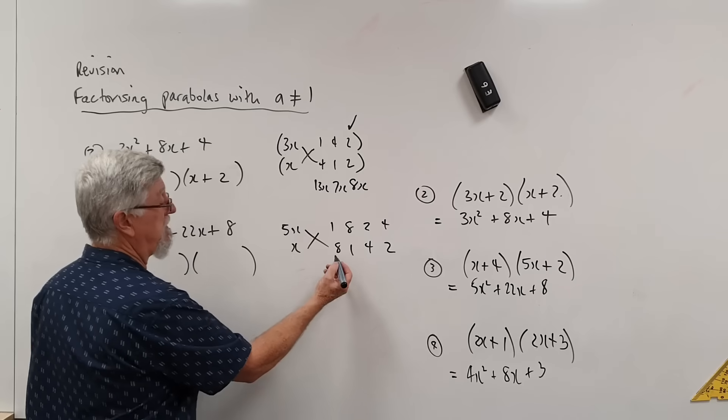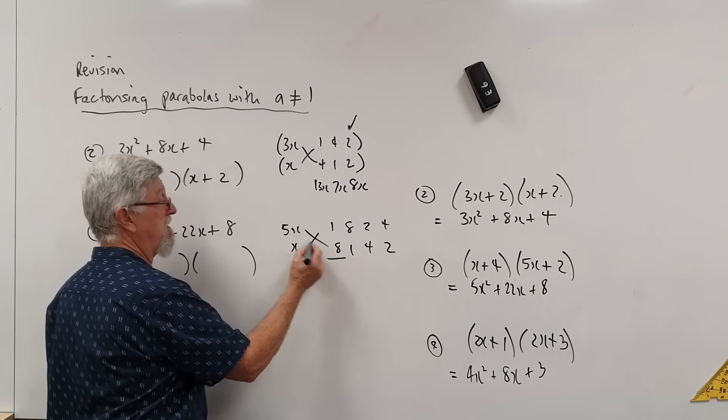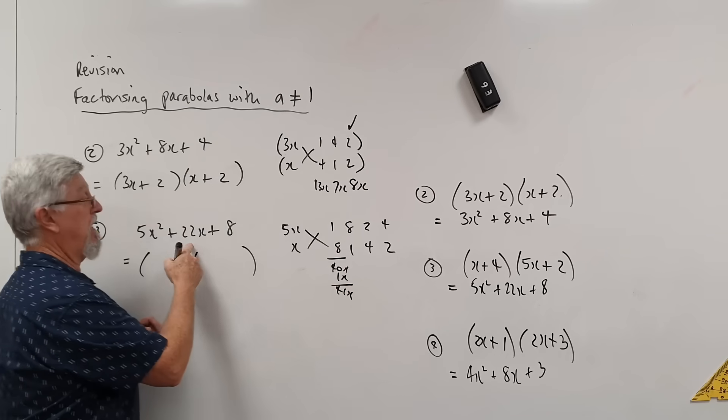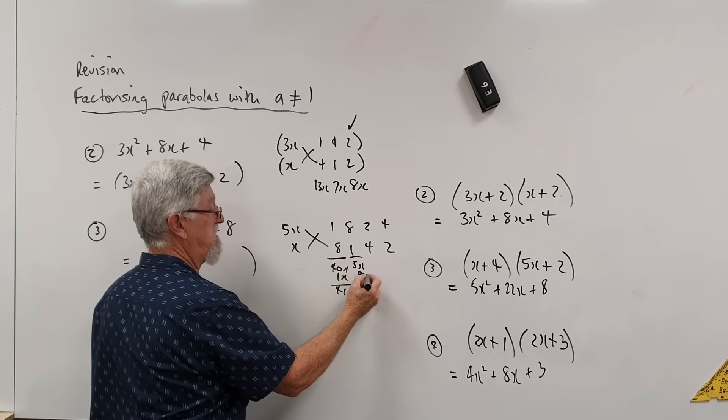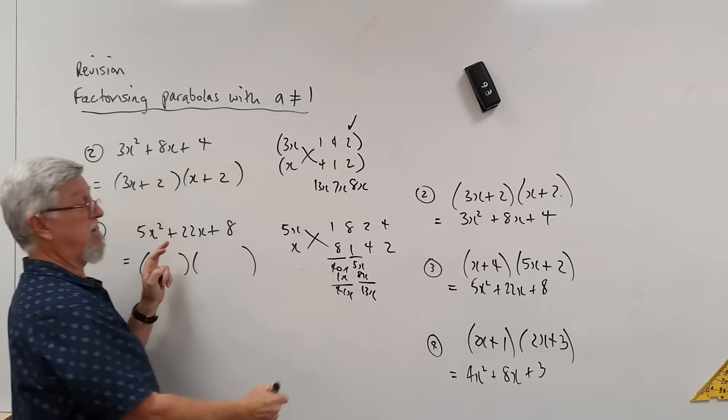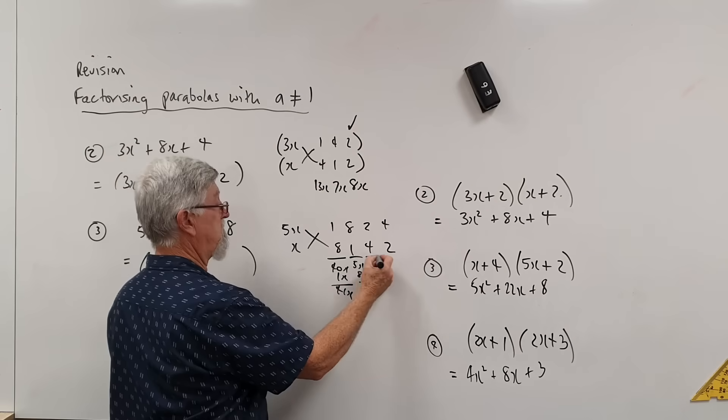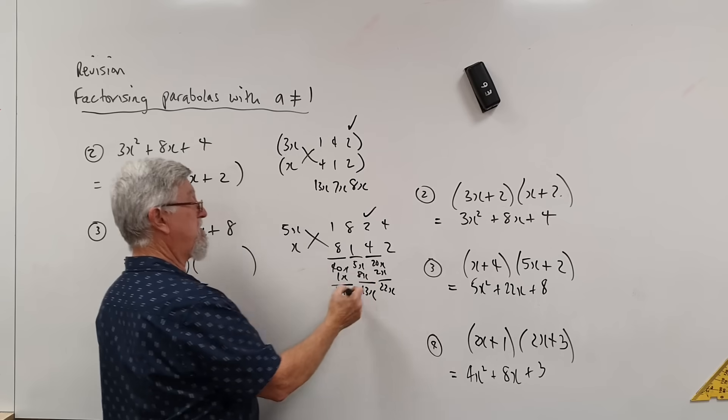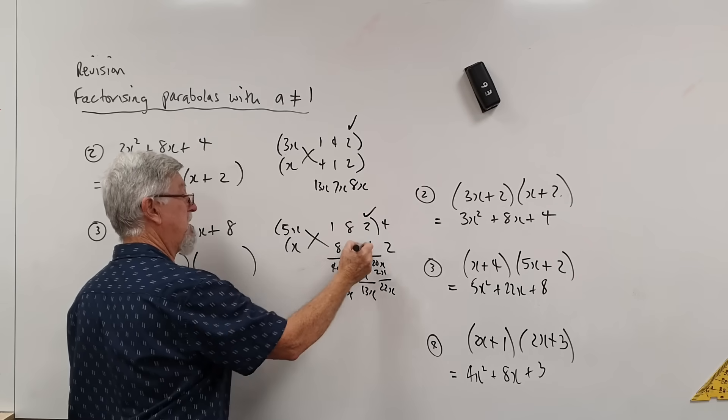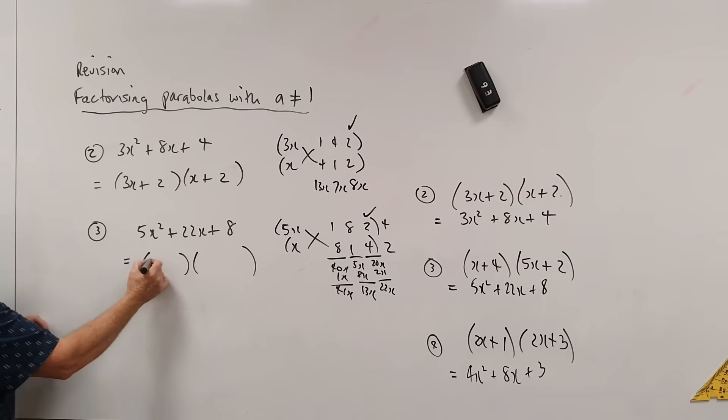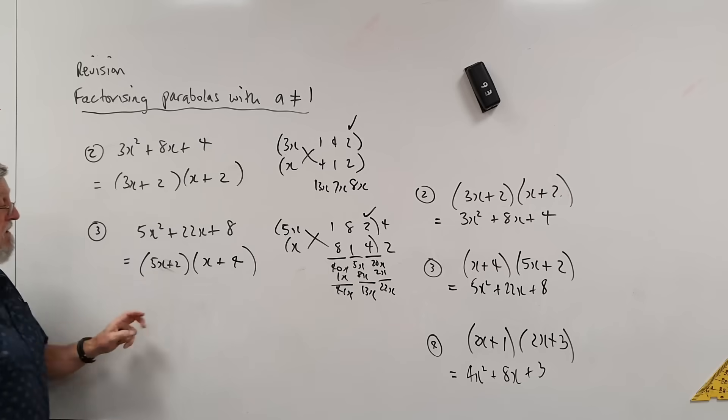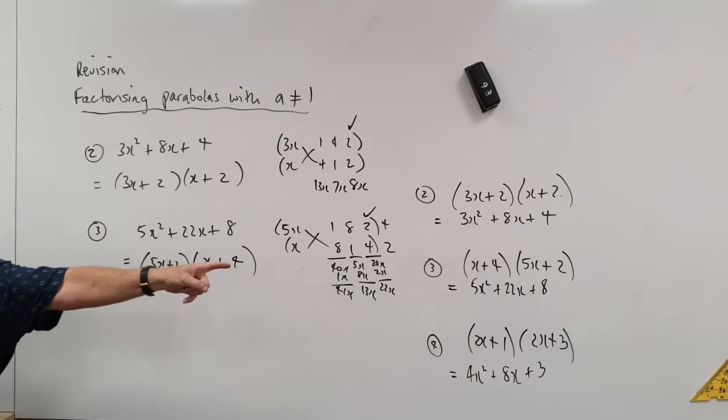And so you can get a 1 and an 8, an 8 and a 1, 2 and a 4, and a 4 and a 2. So this possibility starts going pretty crazy. We have negatives. That was 40x. That's 1x. 41x. Not. 5x. 8x is 13x. Not. Next one. The right one isn't it? 20x plus 2x. 22x. That's the correct one. So the bracket goes there and the bracket goes there. 5x plus 2 and x plus 4. Doesn't matter. I wrote it the opposite way that I wrote it before.